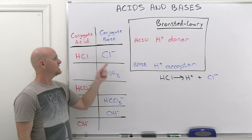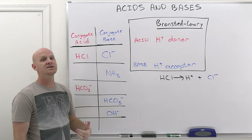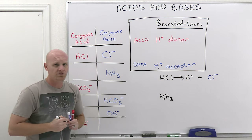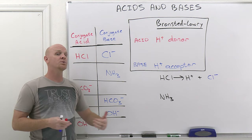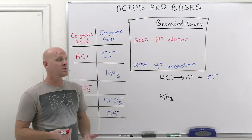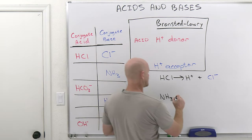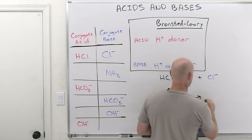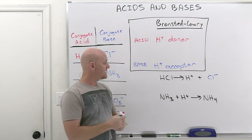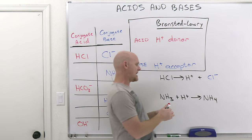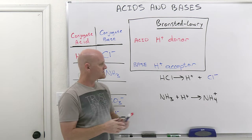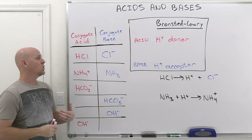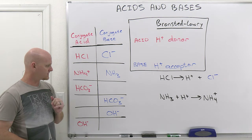Going the other way: we've got ammonia listed as a conjugate base, and the question is what is the conjugate acid of ammonia? Have ammonia act as a base — bases are H+ acceptors. If NH3 accepts an H+, it now has four hydrogens instead of three and gains a positive charge. So NH4+ is the conjugate acid of NH3.